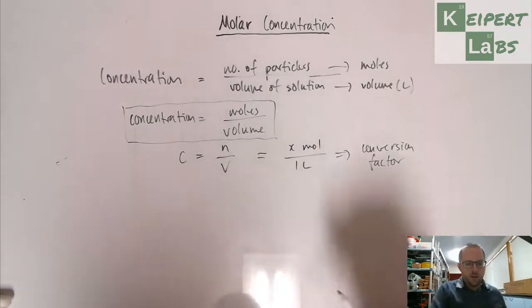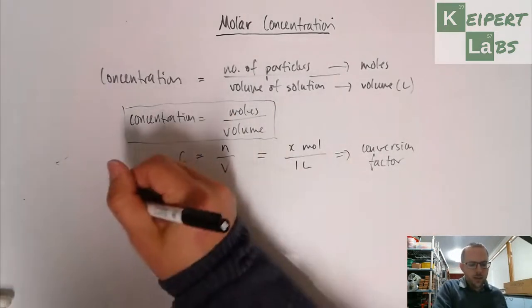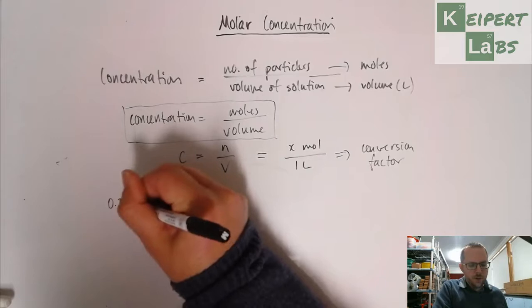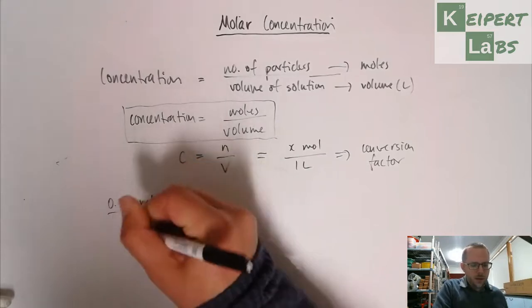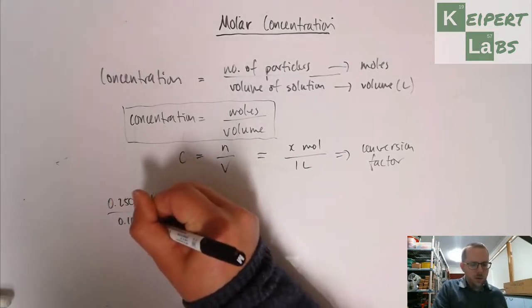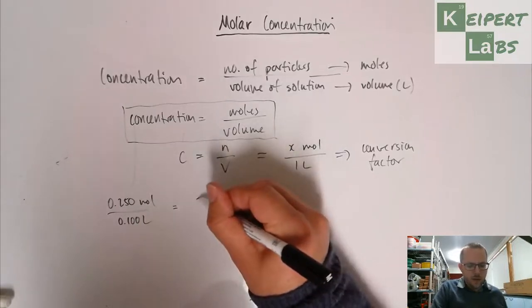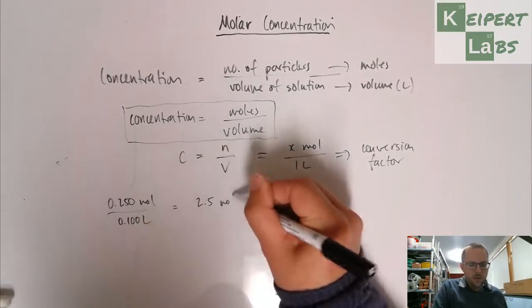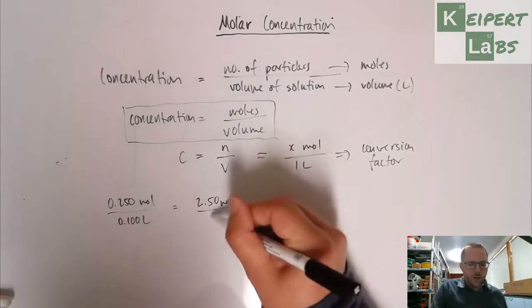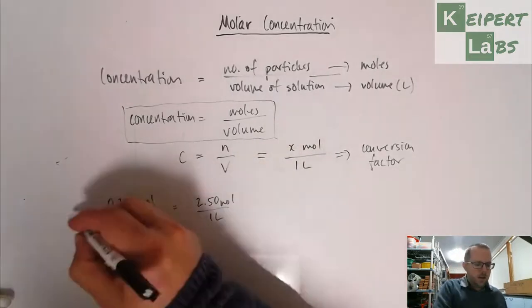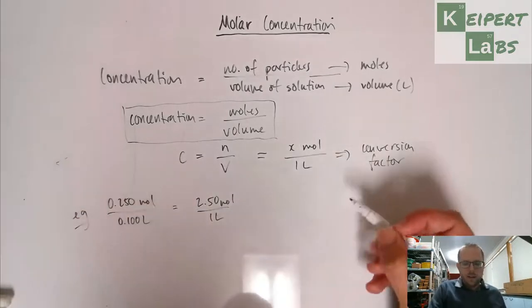So I can say if I've got 0.25 moles of a substance in 100 mils or 0.1 liters, so I can then say I have 2.50 moles for every one liter of solution.